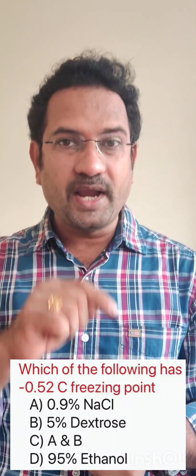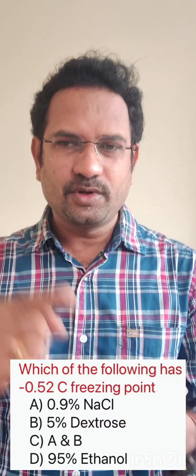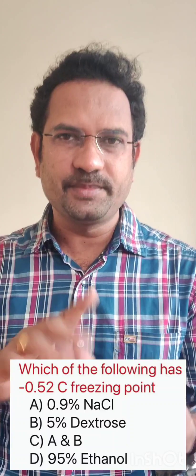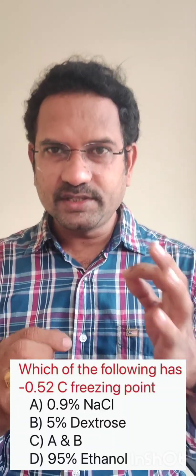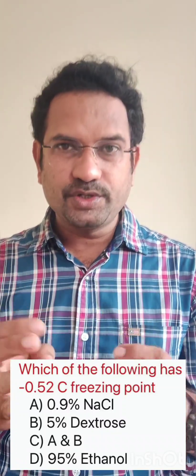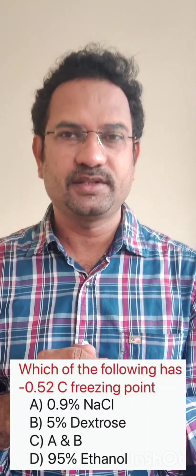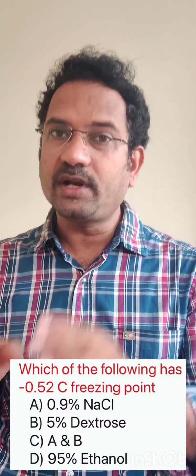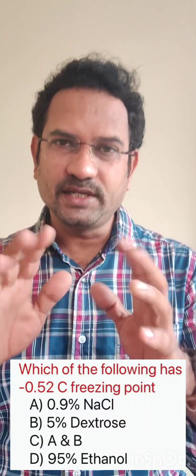The next question: which of the following has a minus 0.52 degrees freezing point? Options are 0.9% sodium chloride, 5% dextrose, both A and B, or 95% ethanol. Blood plasma freezes at minus 0.52 degrees centigrade. Any solution that freezes at the same temperature is isotonic with blood plasma. Now 0.9% sodium chloride and 5% dextrose are isotonic solutions, meaning they also freeze at minus 0.52 degrees centigrade.